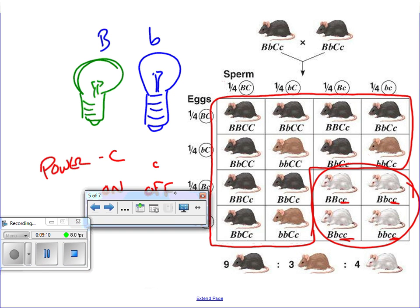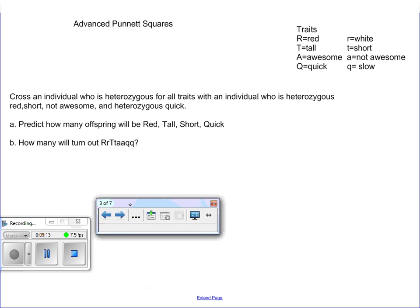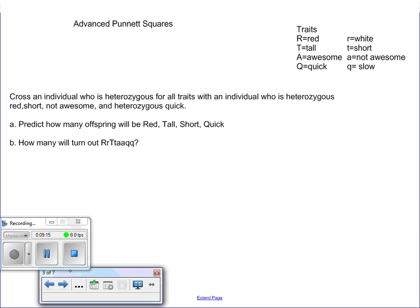Okay, let's go back to our Punnett square and being able to do this. If you would like to pause and see if you can do this by yourself before you listen to me give you the answer, that would probably be beneficial. We have a cross here where we're saying heterozygous for all traits. So that would be big R, little r, big T, little t, big A, little a, big Q, little q.